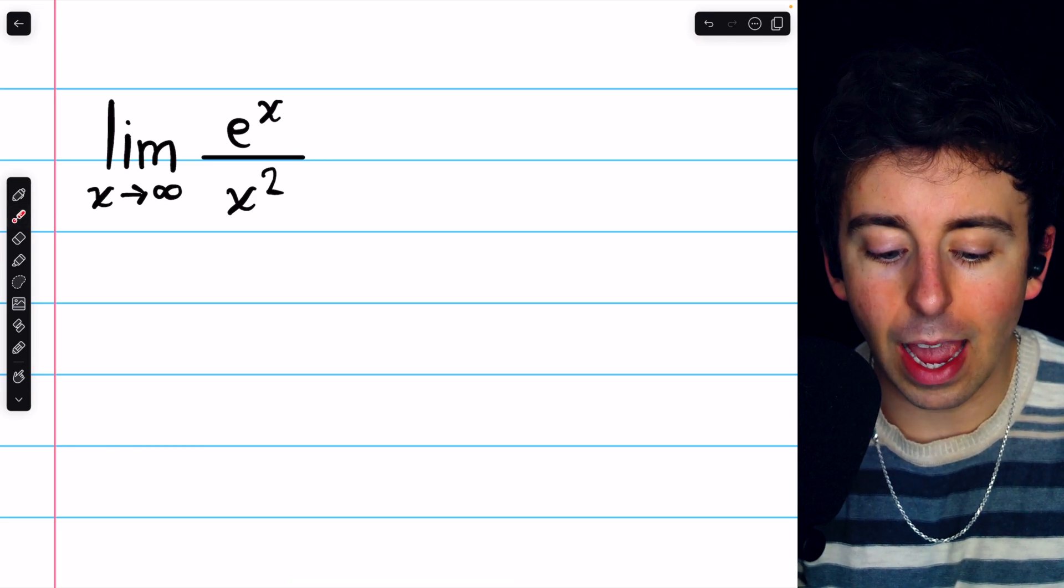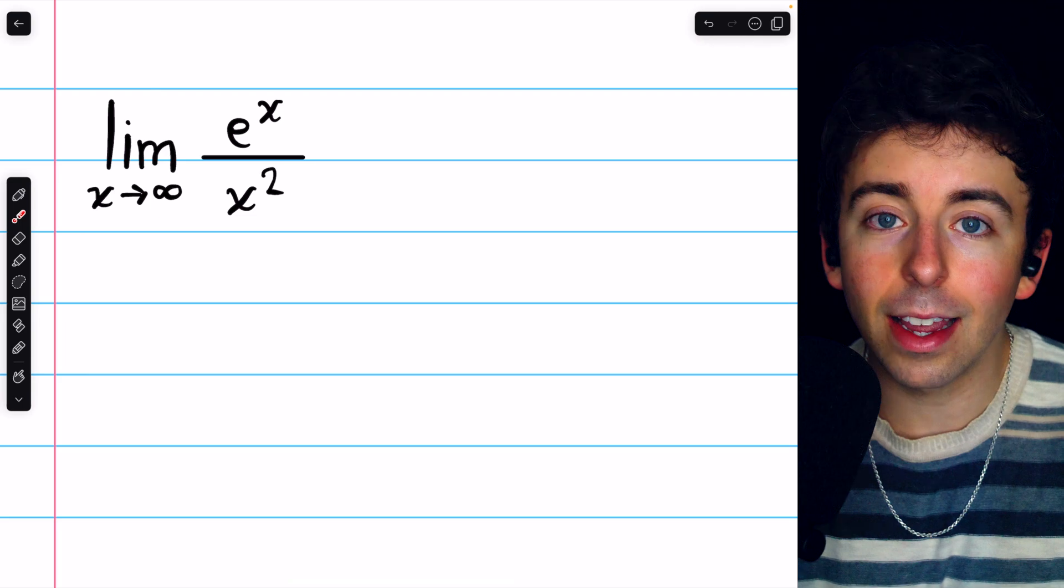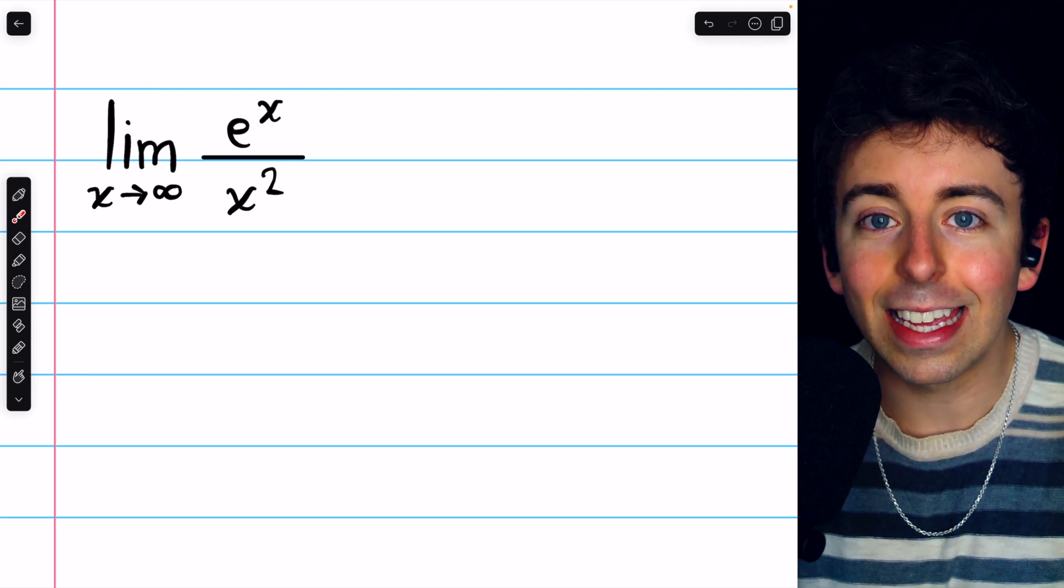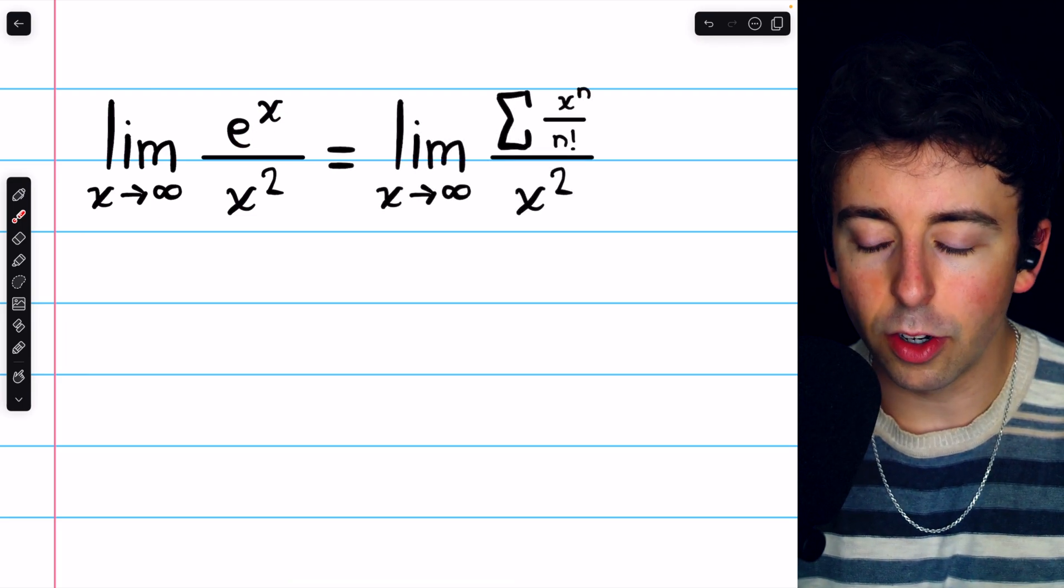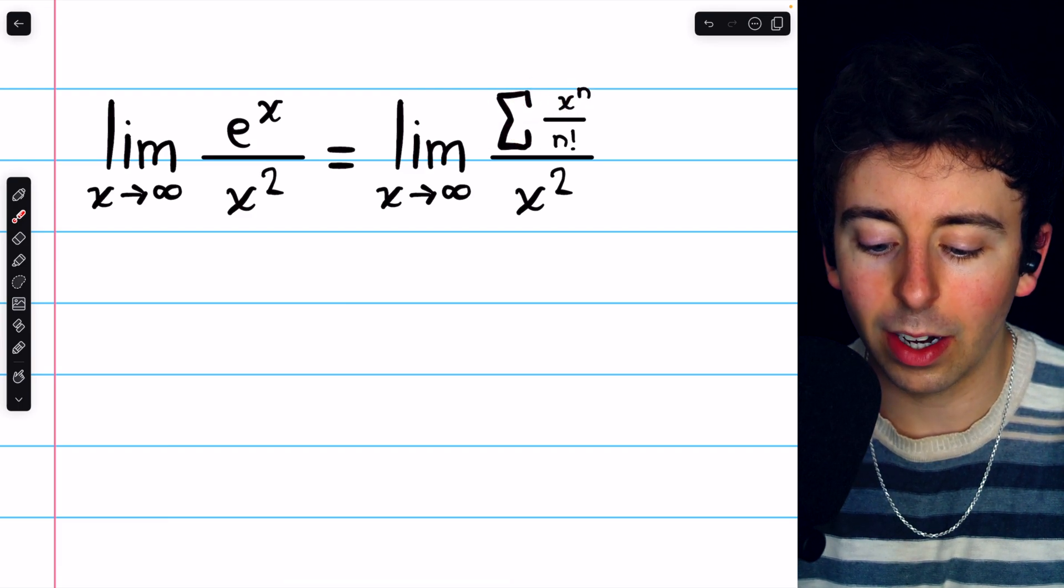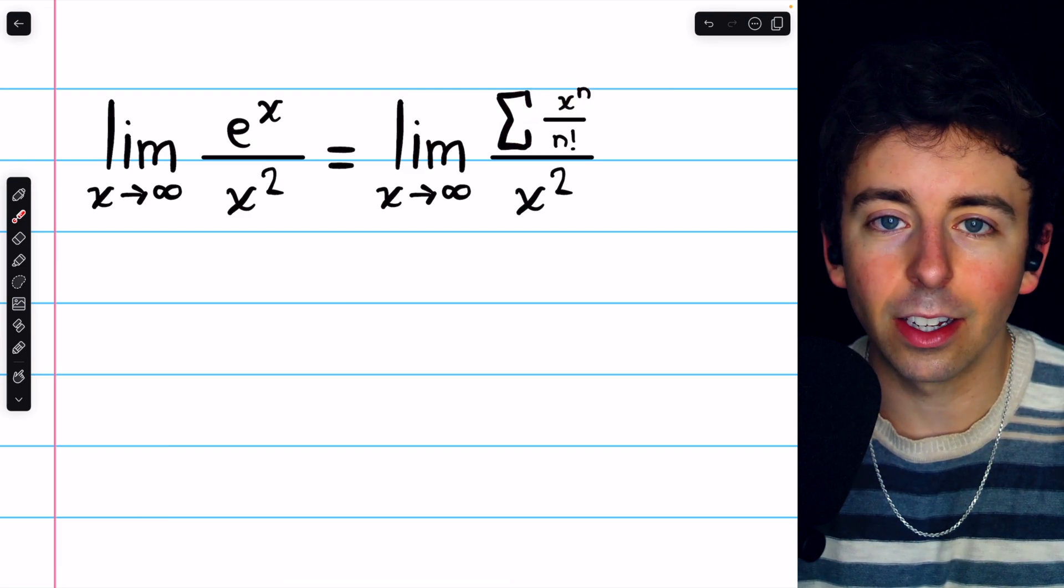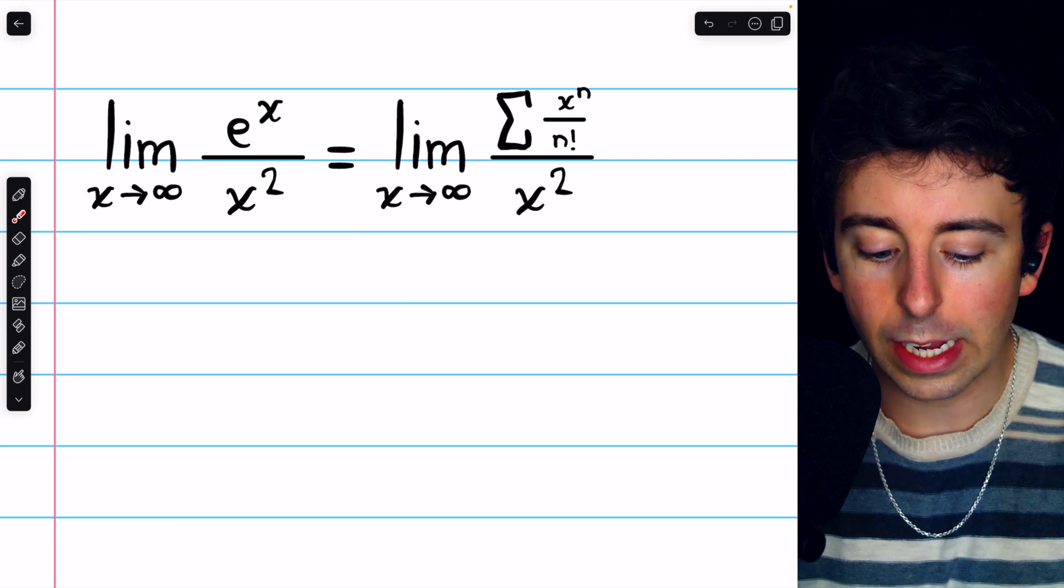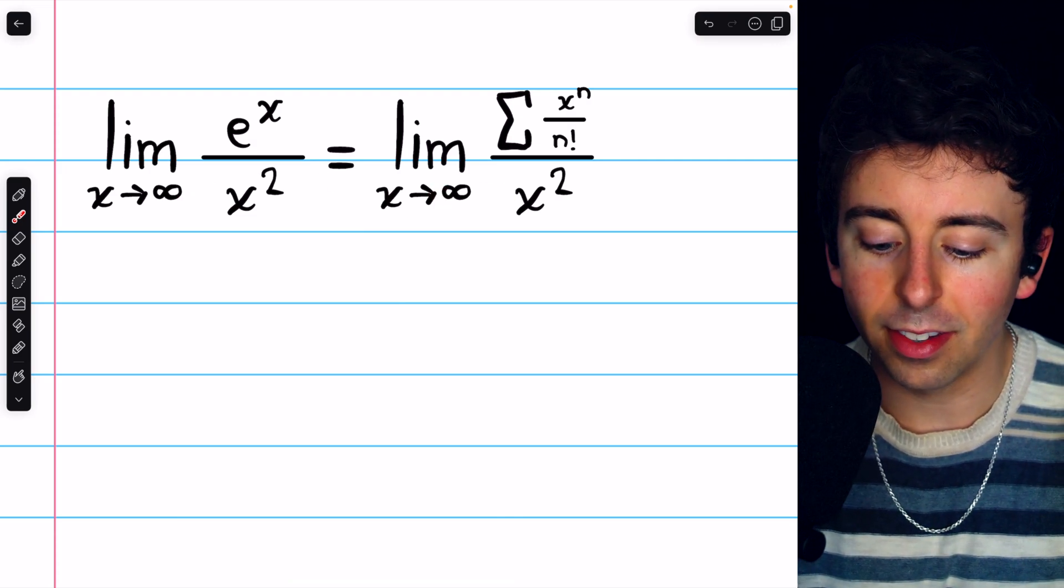But we can also observe the behavior of this limit using a series expansion with e to the x. E to the x in the numerator is the same as the sum of x to the n over n factorial, where we understand n goes from 0 to infinity. So these two things are the same.